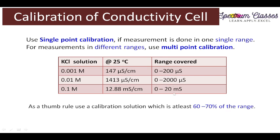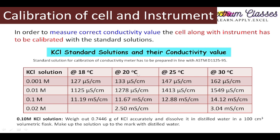Whichever range your solutions fall in — if you know that — you must go with that particular solution. We cannot use all three solutions for a given range. If you do not have ATC (automatic temperature controller) in your instrument, you can plot a graph between temperature and specific conductivity, then pass a trend line through the points to interpolate values in between temperatures. In this way you can get the specific conductivity at your room temperature, for example at 21.2 degrees centigrade. This is another approach, alternatively you use a perfectly calibrated ATC.